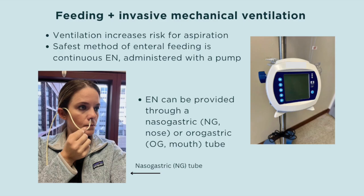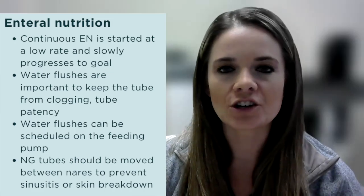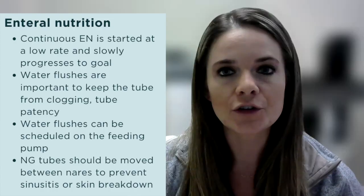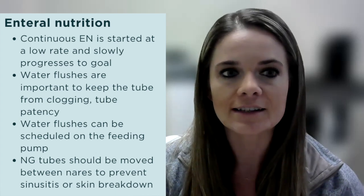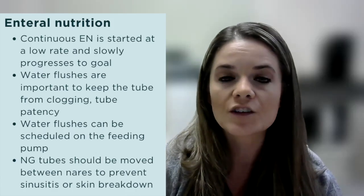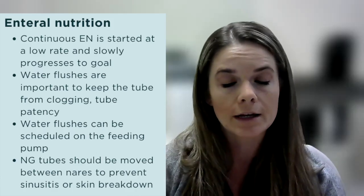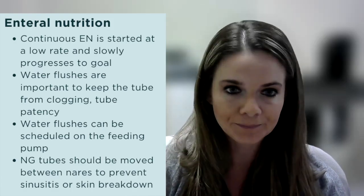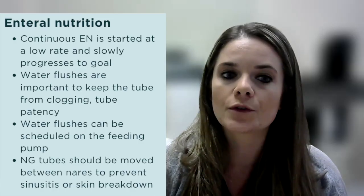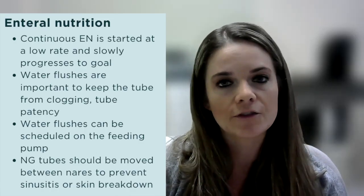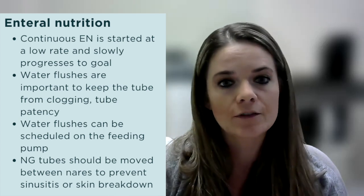A patient's nasogastric or orogastric tube is ready for use once its position is verified via abdominal X-ray, also known as a KUB. Continuous tube feeds are generally started at a low rate such as 20 mL/hr and titrated to goal over 24 to 48 hours — for example, advancing by 10 mL every six hours. It is imperative to ensure water flushes are ordered on the tube feeding pump to maintain tube patency and prevent clogging. It is also important to advise the medical team to switch the nostril the tube is placed in at least every two weeks to prevent nasal skin breakdown or sinusitis.